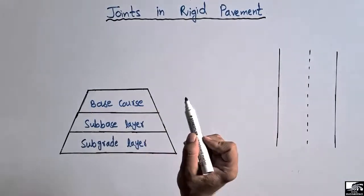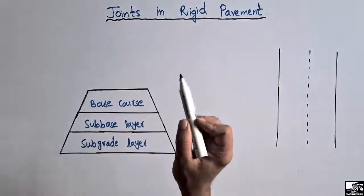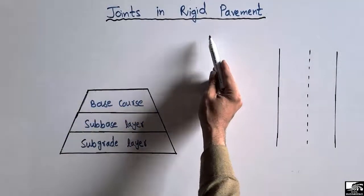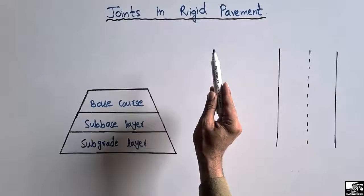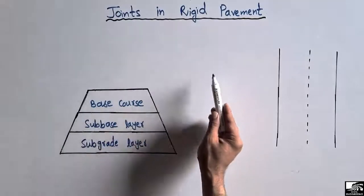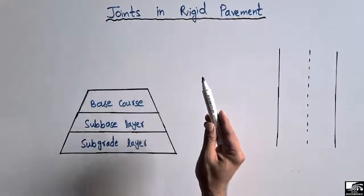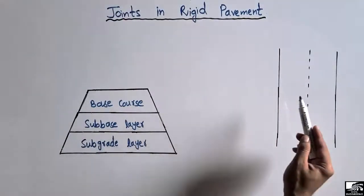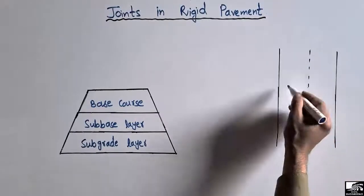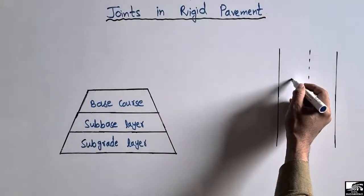There are two types of joints used in the construction of rigid pavement: one is called the longitudinal joint and one is called the transverse joint. Let's consider that this is the rigid pavement in which the traffic moves.